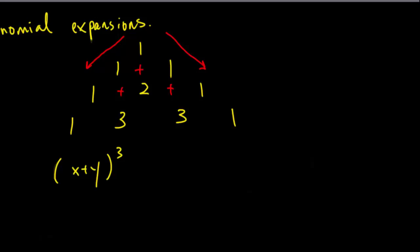In your triangle, each row represents the power that the function is raised to. So for example, this row is raised to the power of zero, this one to the power of one, this one to the power of two, and this one to the power of three. Since my question is (x + y) raised to the power of three, I should be using this line right here — these are my coefficients.